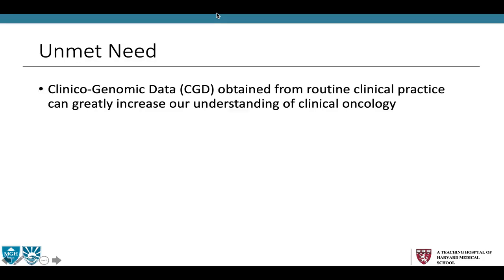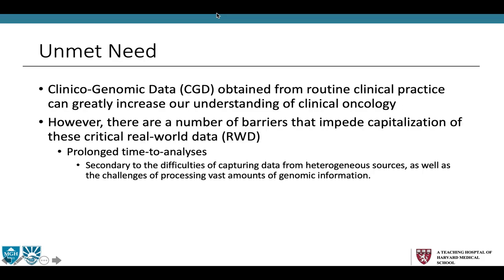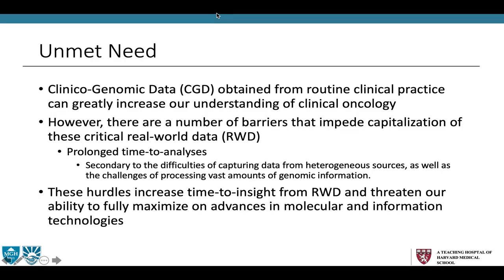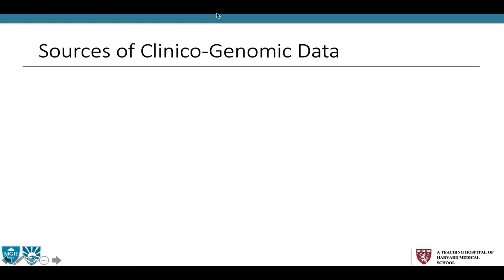What is the unmet need? Clinical genomic data obtained from routine clinical practice can greatly increase our understanding of clinical oncology. But there are a number of barriers that impede capitalization of these critical real-world data — for example, prolonged time to analysis, secondary to the difficulties of capturing data from heterogeneous sources and the challenges of processing vast amounts of genomic information. These hurdles increase the time to insight from real-world data and threaten our ability to fully maximize advances in molecular and information technologies.